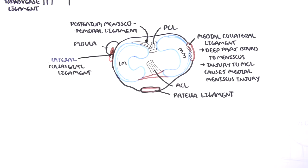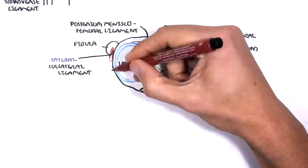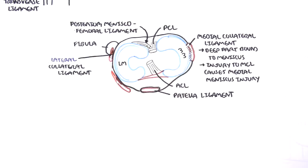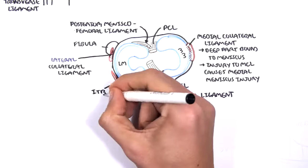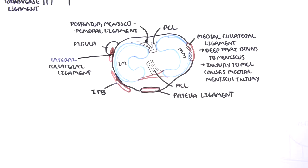Finally, another important fascia that runs down and joins to the anterior lateral part of the tibia is the iliotibial band. Now let us talk about the function of the meniscus. And there are four main functions.